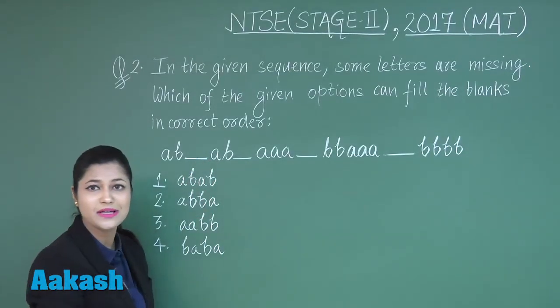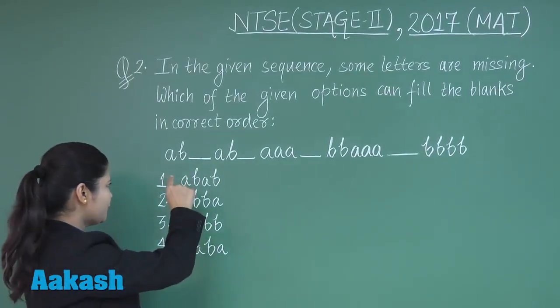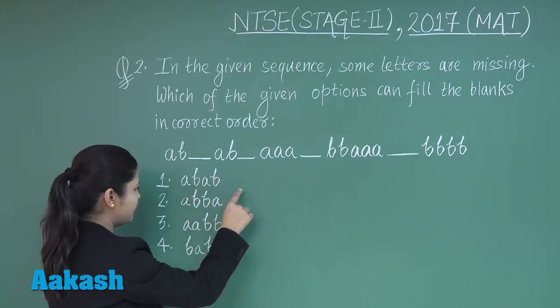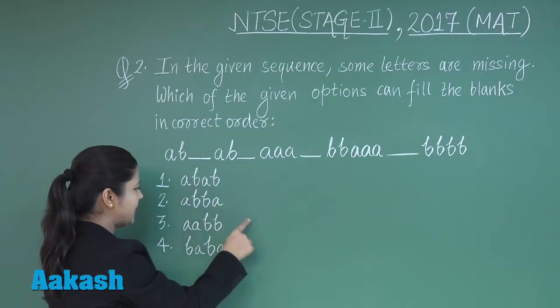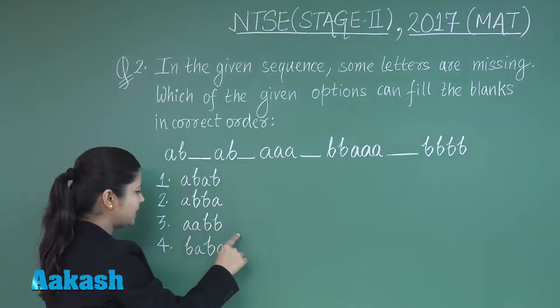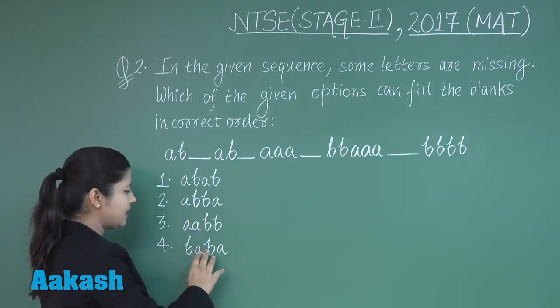The options are: first option we have a b a b, second option we have a b b a, third option we have a a b b, and fourth option we have b a b a.